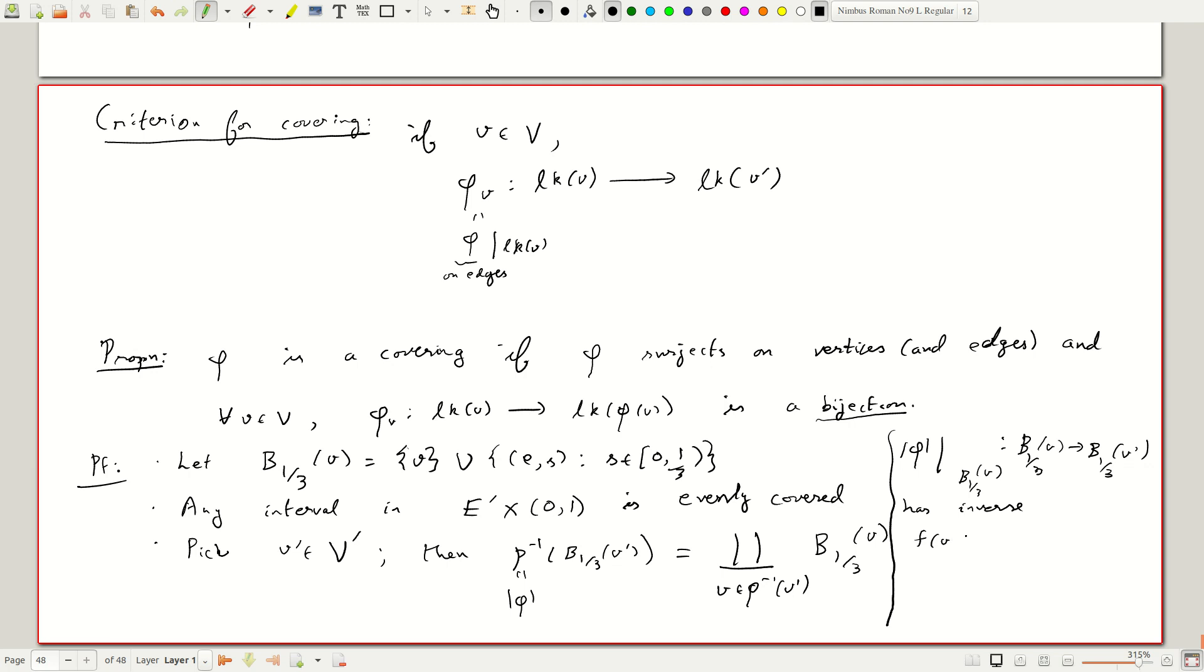If I look at f of v prime is of course just v, but f of suppose I take a point e comma s, well we have a bijection on phi_v, phi_v which is a bijection. I look at phi_v inverse of e. This is an edge with initial vertex v rather and s. It is easy to see that this is an inverse and so we have a local homeomorphism.